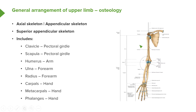The lower limb would be your inferior appendicular skeleton. The superior appendicular skeleton includes a whole series of bones. We have the clavicle, with its medial end attaching to the sternum. We then have the scapula — this flat, triangular-shaped bone that lies alongside the posterior aspect of the ribs. We then have the humerus, a long bone that articulates with the glenoid cavity of the scapula, forming the glenohumeral or shoulder joint.